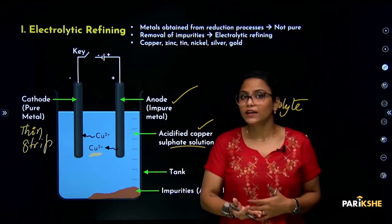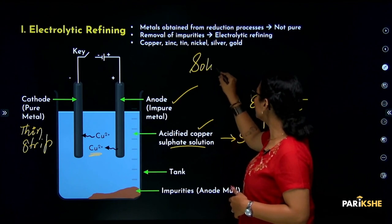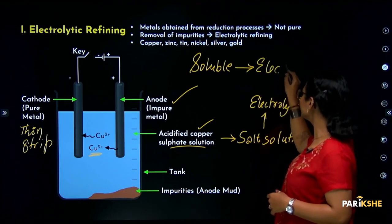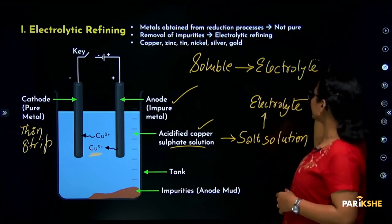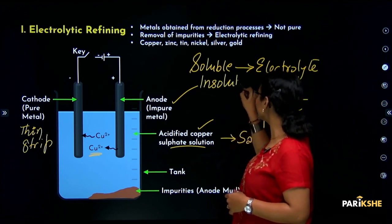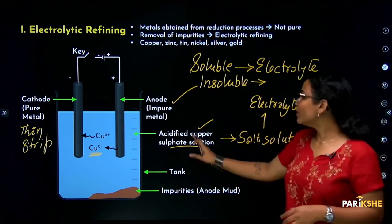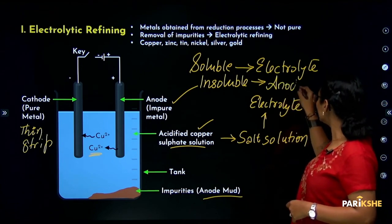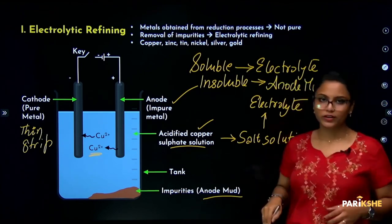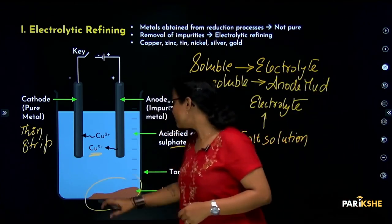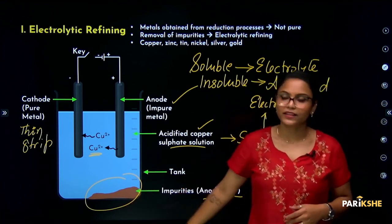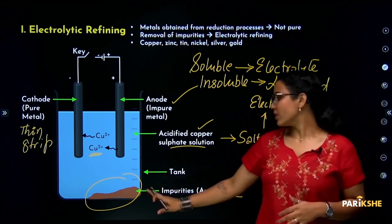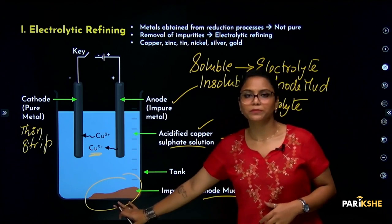There are two types of impurities. Soluble impurities dissolve in the water and are separated. Insoluble impurities do not dissolve in water; they settle at the anode in the tank as a small pile. This settling of insoluble impurities near the anode in the tank is called anode mud.